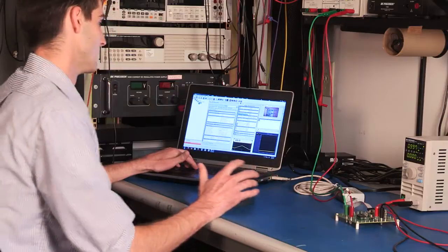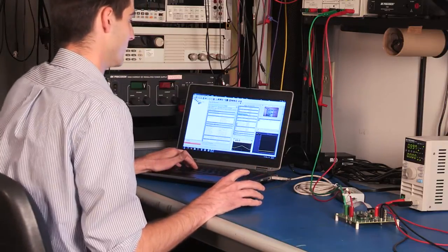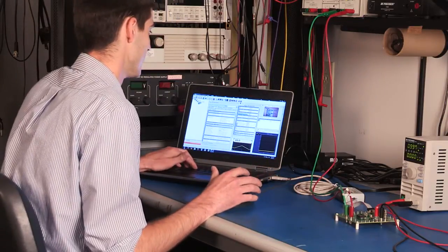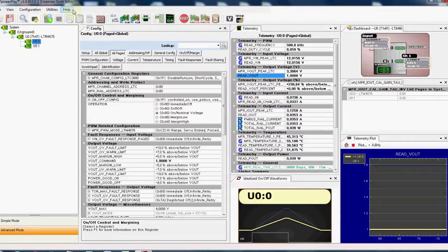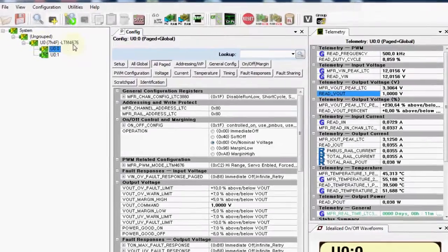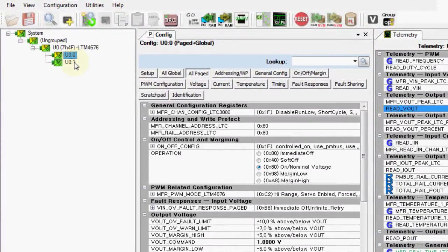Now let's go ahead and turn to the LTPowerPlay software to actually program our output voltage and monitor the system. You can see all sorts of information here, including the device that we have connected to the PC and each output of the device.